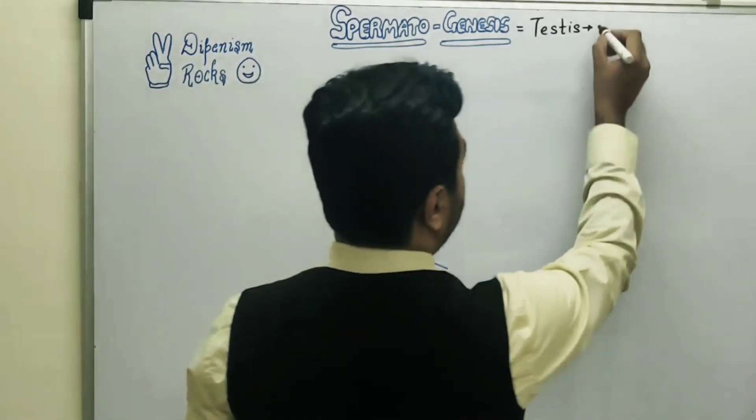These primary spermatocytes are just growing in size, so their chromosome number remains the same — they remain diploid only. Now these primary spermatocytes undergo the next phase of MGM, which is known as the maturation phase.